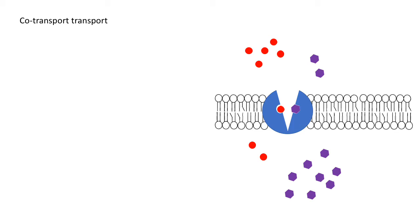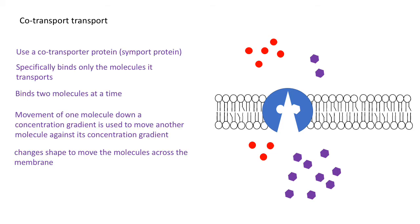When they bind, that causes a change in shape of the co-transport protein or symporter, and so those molecules can move to the other side of the membrane. When they are removed, then the symporter will change back shape, and it can continue to do that process. So your answers should be these.